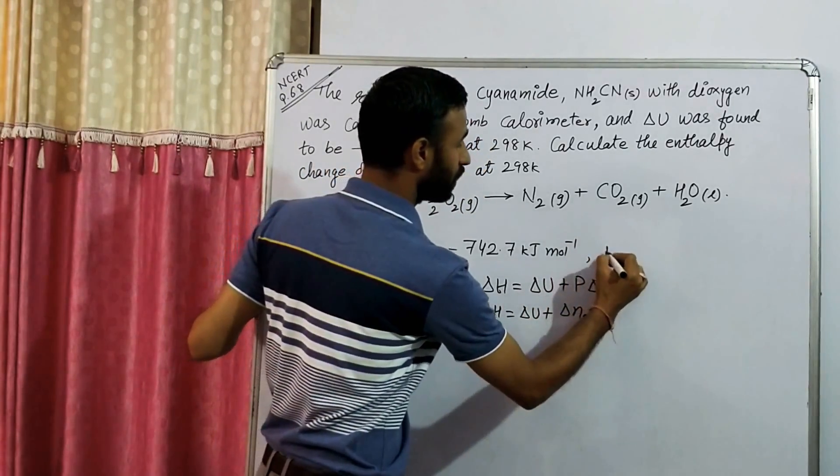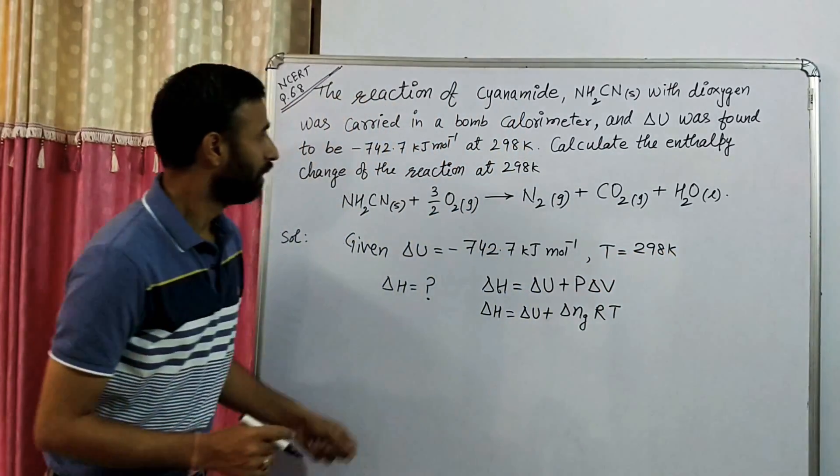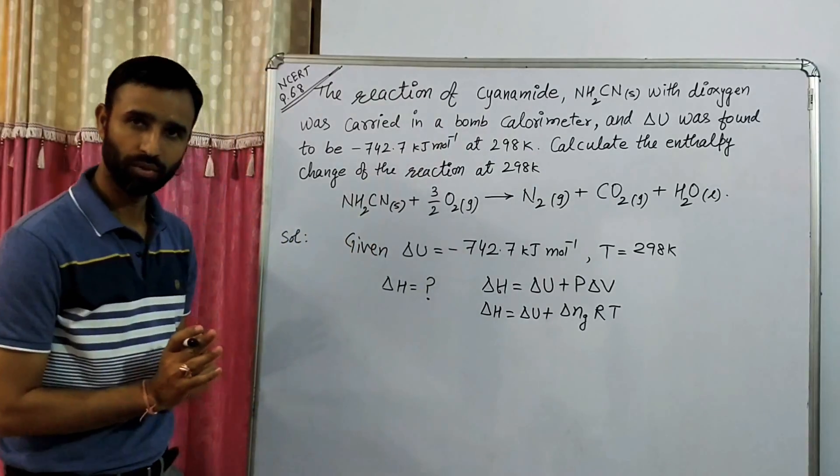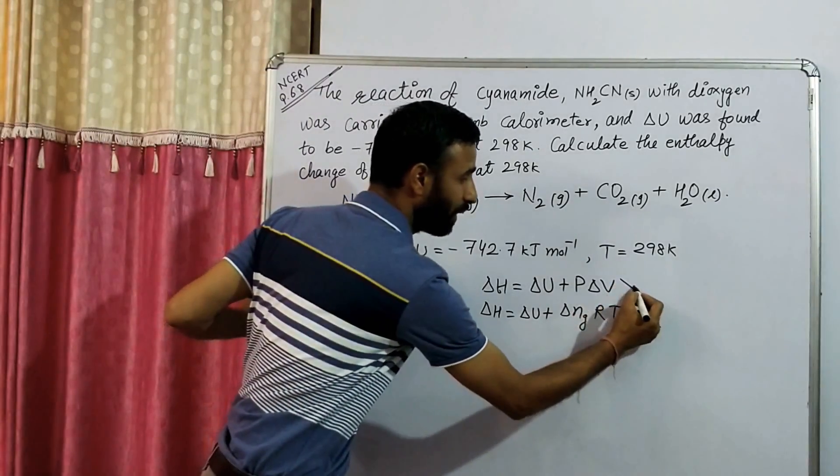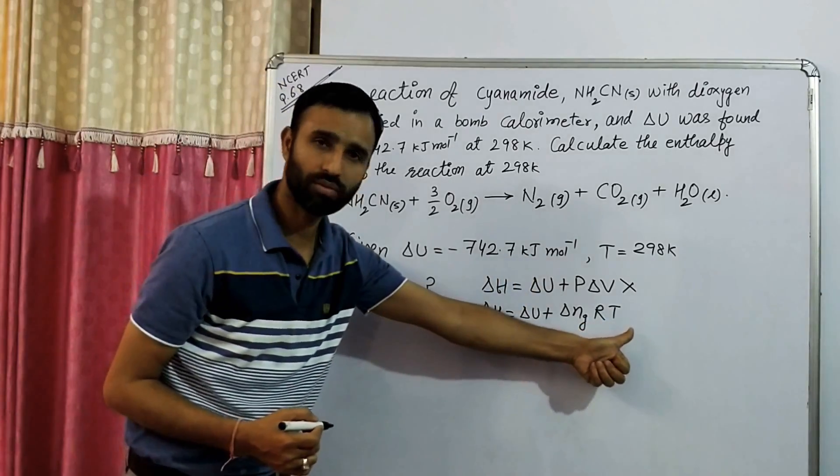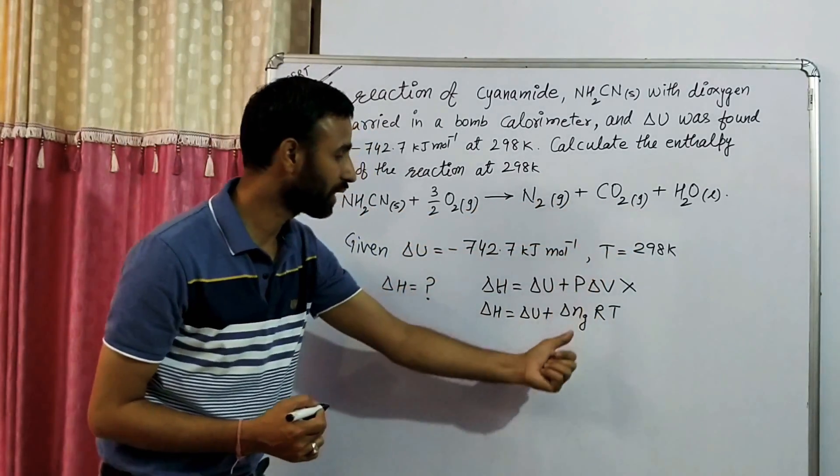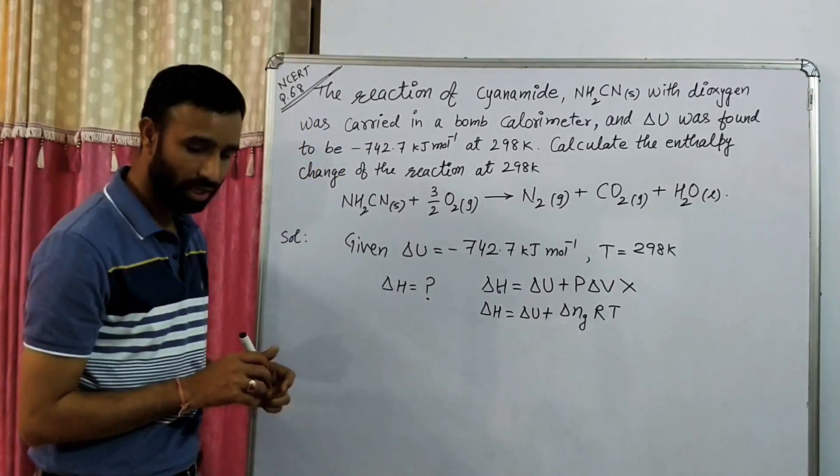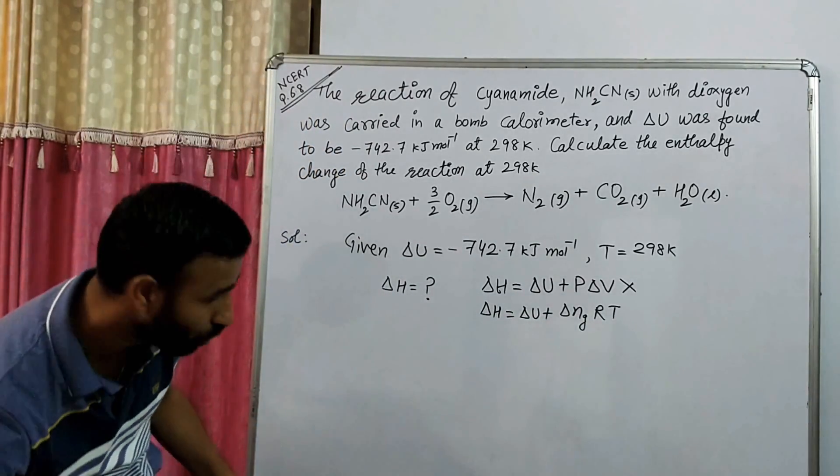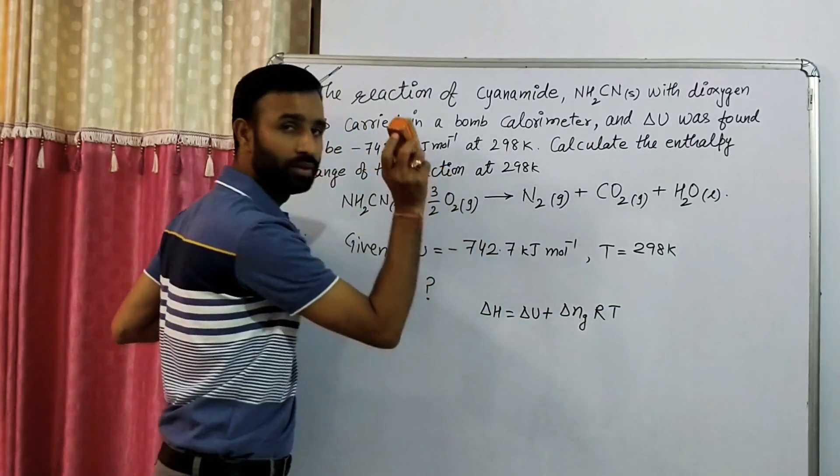Now see, temperature is given to you, that is 298 Kelvin. Volume is not given anywhere, that means this relation cannot be used. Even pressure is not given, but temperature is given. By using this equation, you can calculate delta Ng. That means the relation which we have to use is this one.